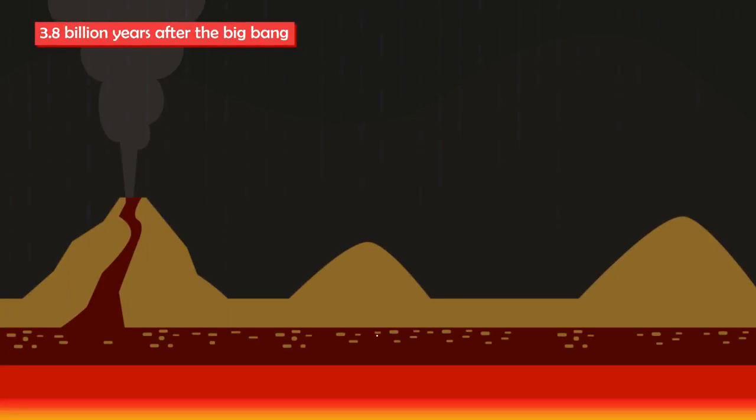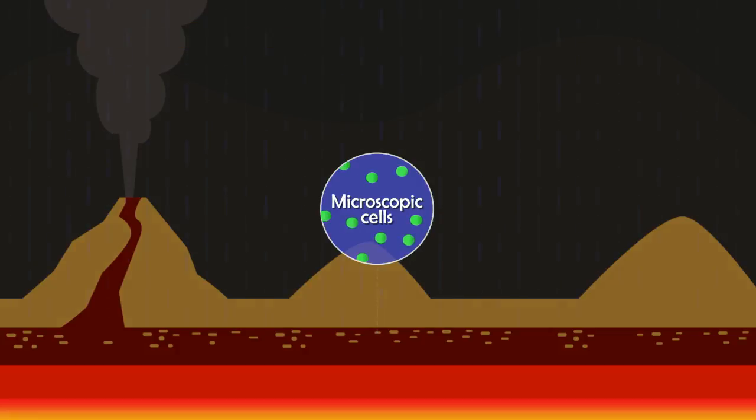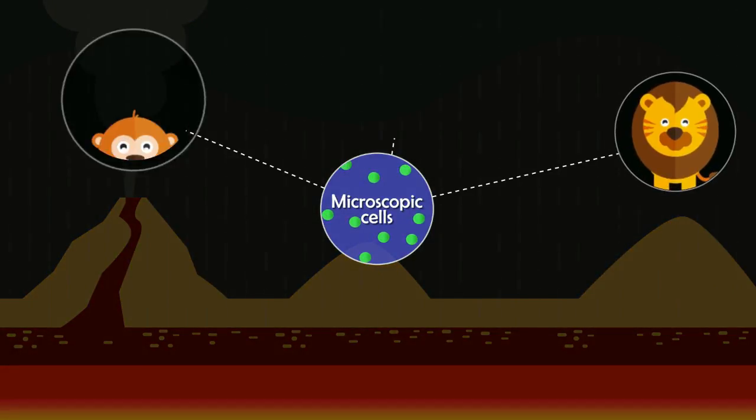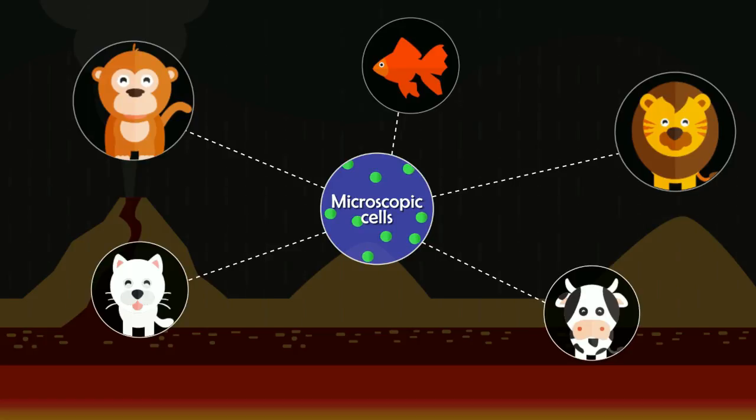About 3.8 billion years ago, our planet Earth cooled down, allowing microscopic living cells to thrive in the harsh volcanic environment. From a single common ancestor, life on Earth evolved and began spreading its branches in every direction.